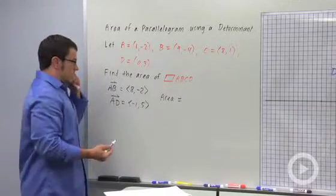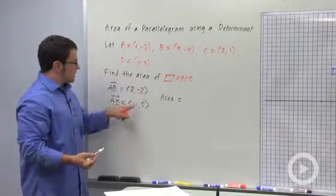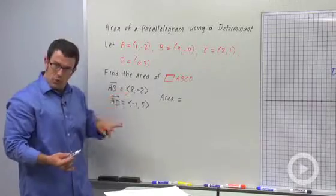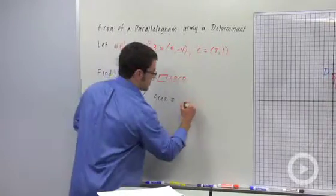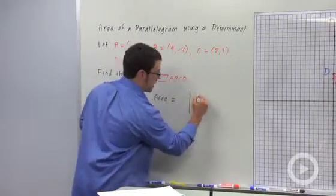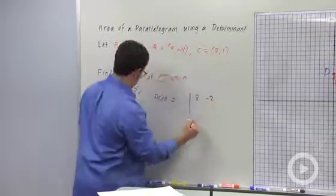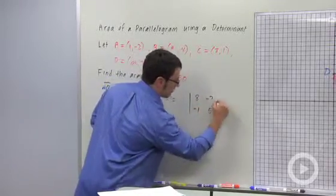So the way we do this is we form a determinant using these vectors as the rows of the matrix. So the determinant is 8, negative 2, negative 1, 5.